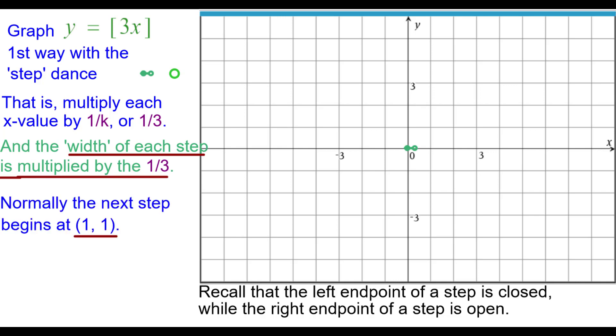Normally the next step begins at 1 comma 1, but for our graph it's going to be right 1 third up 1, because 1 third times that 1 is 1 third. The y value has remained unchanged. So at 1 third comma 1, we will put our next step. Again, the step is about 1 third of a unit wide.